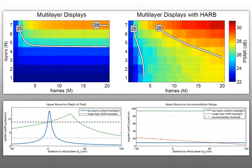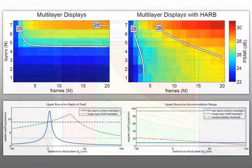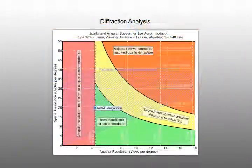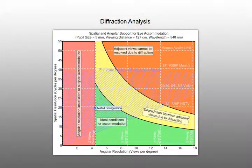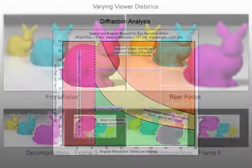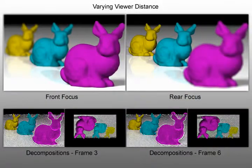In our paper, we derive upper performance bounds and provide performance simulations for Focus 3D, and show that the architecture supports moving observers over a wide viewing zone, even away from the conjugate plane of the HAR backlight.